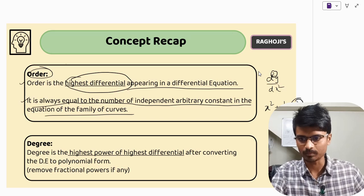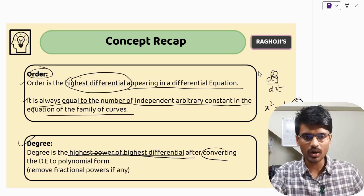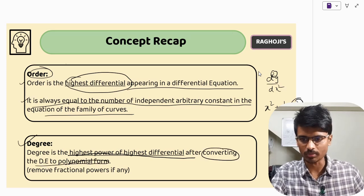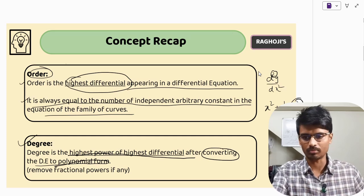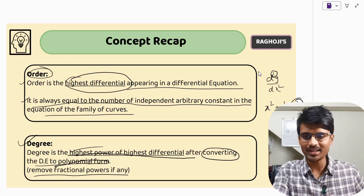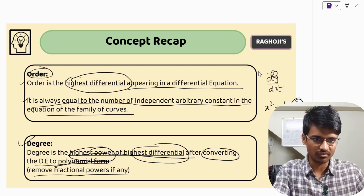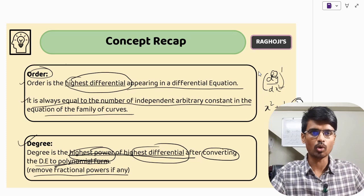Coming to degree: degree is the highest power of the highest differential, after converting the differential equation to polynomial form. Convert it to polynomial form and remove any fractional powers. Once it is in polynomial form, find the highest power of the highest differential. For example, if the highest differential is d²y/dx² with power 1, the degree is 1. Looking at questions will give you a better idea.